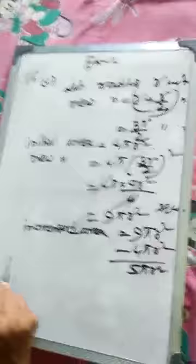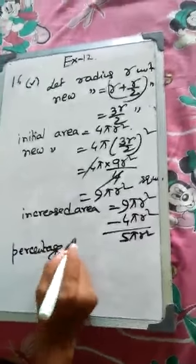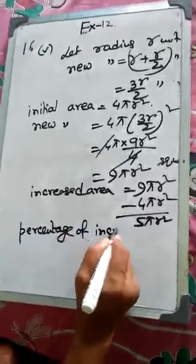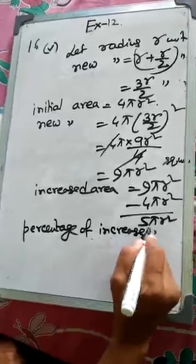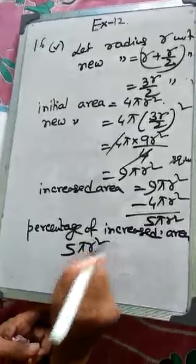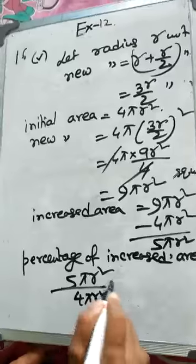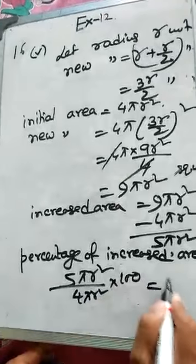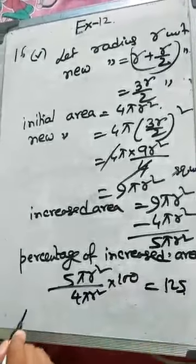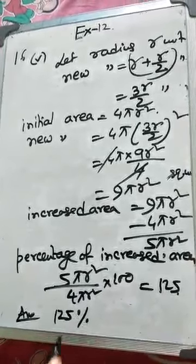So percentage of increased area, 5π R² by 4π R² into 100. So it is 125. Answer is equal to 125 percent.